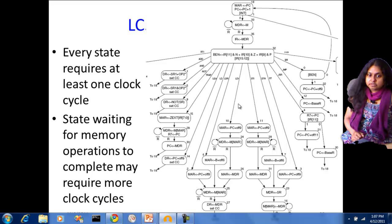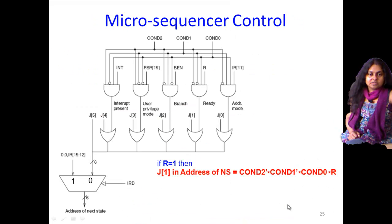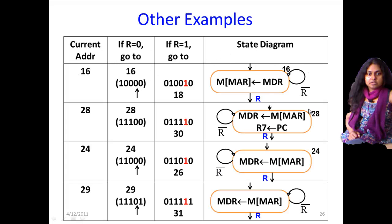So let us just go back to the LC3 state diagram. So number 16 is right here. In number 16, if you stay, if you haven't finished your memory operation, you are staying in 16, otherwise you go to 18. And this number 18 has been encoded because of the circuitry that we just saw here. So similarly from 28 you go to 30, from 24 you go to 26 and so on and so forth.